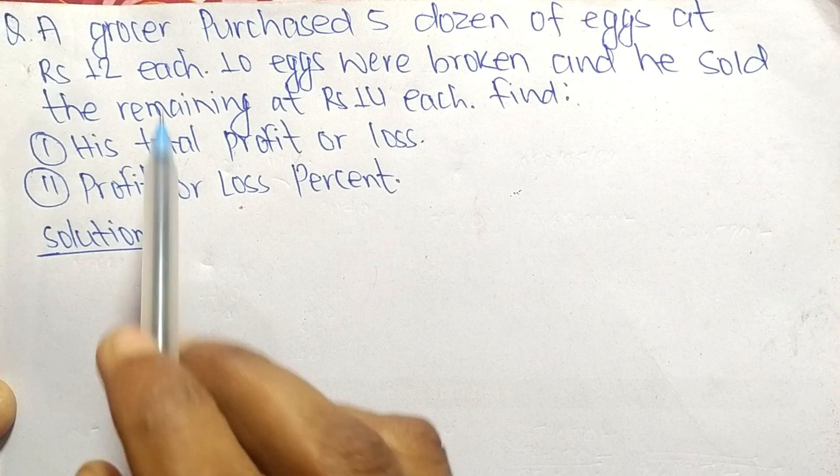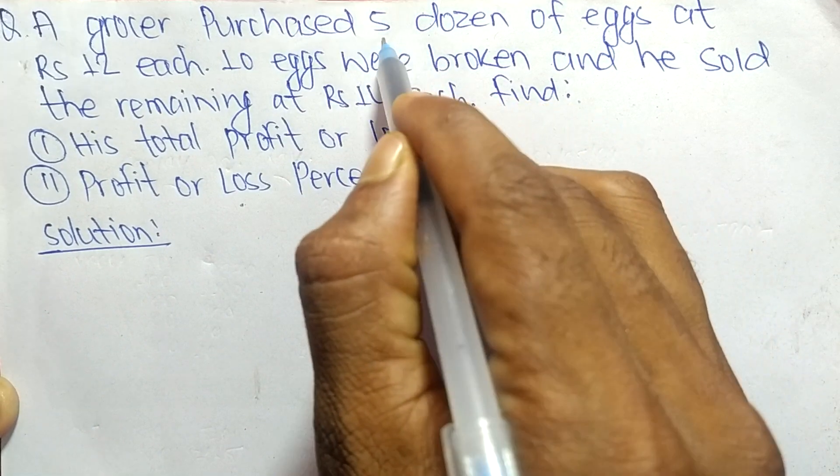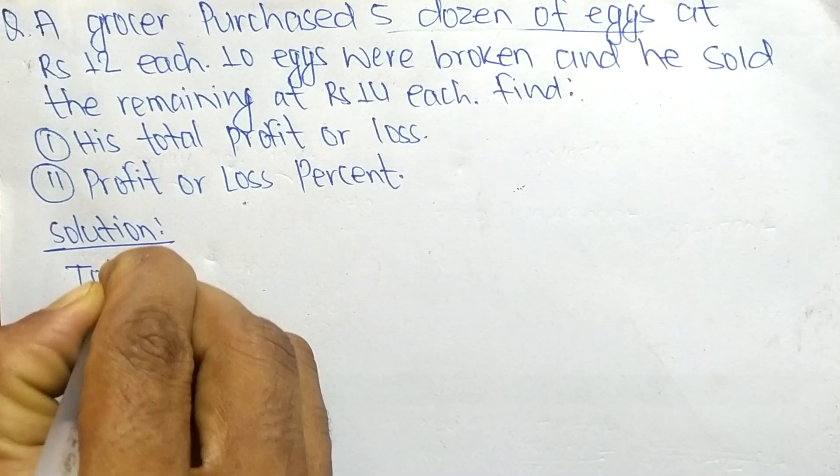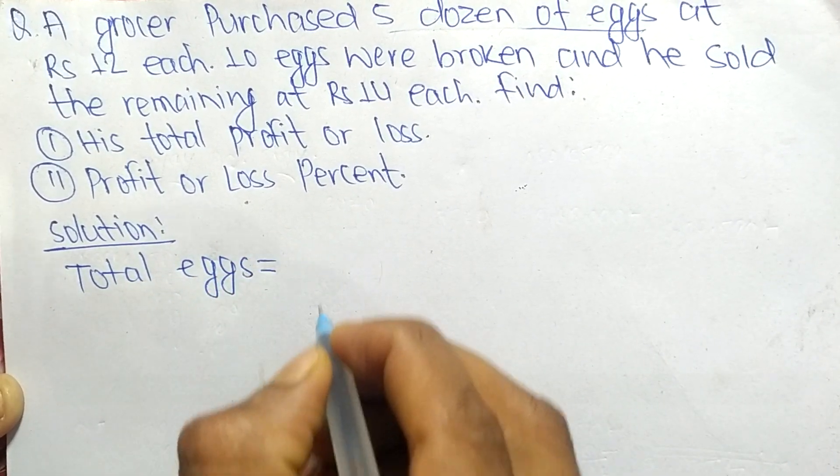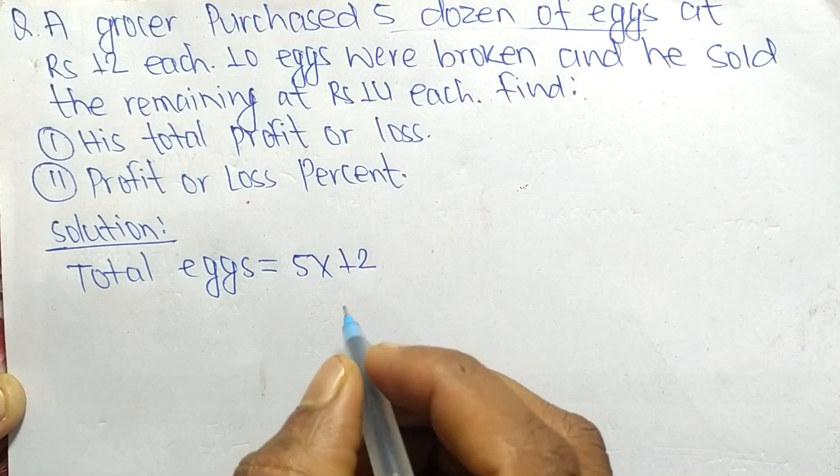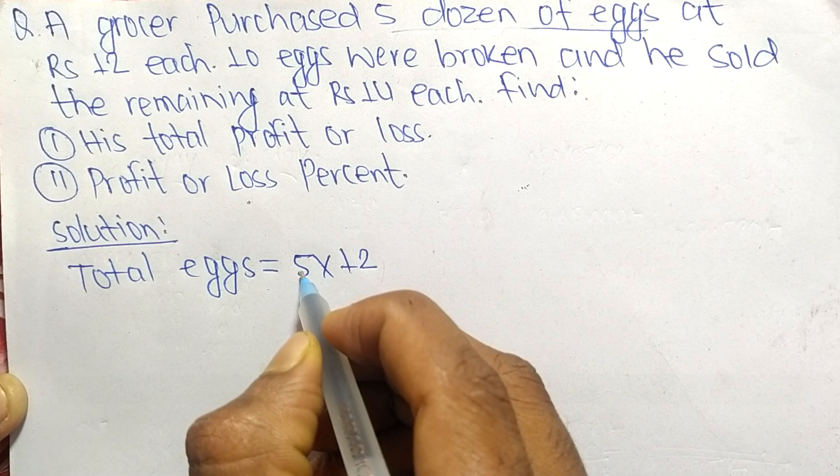Given: a grocer purchased 5 dozen eggs. Total eggs = 5 dozen = 5 × 12. Each dozen contains 12 pieces, so 5 dozen = 5 × 12 = 60 eggs total.